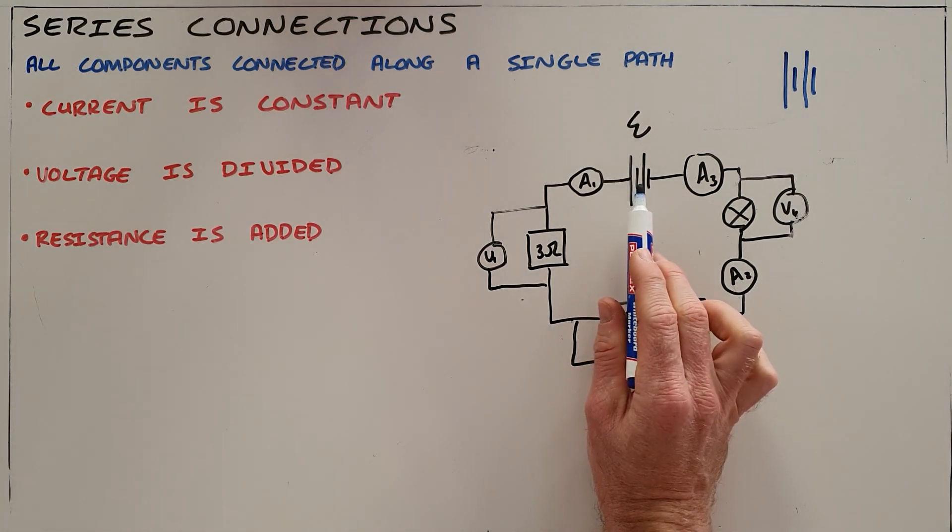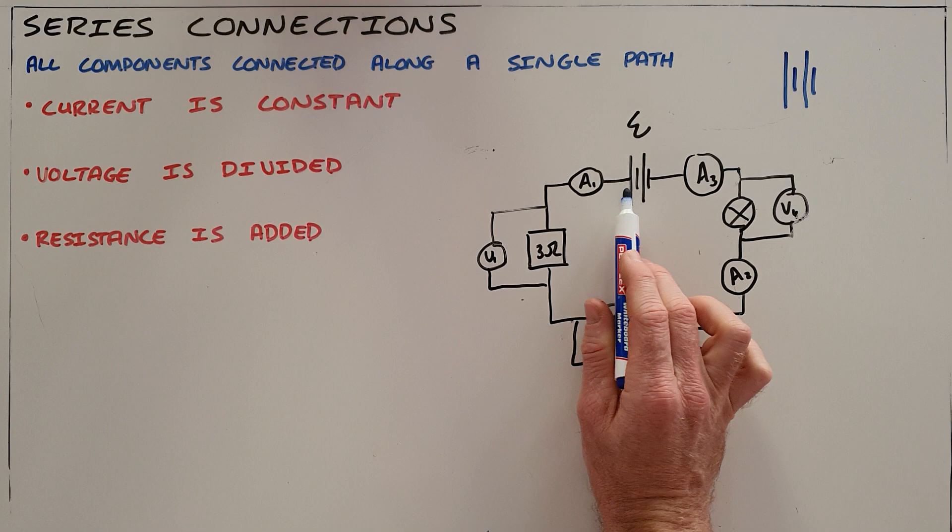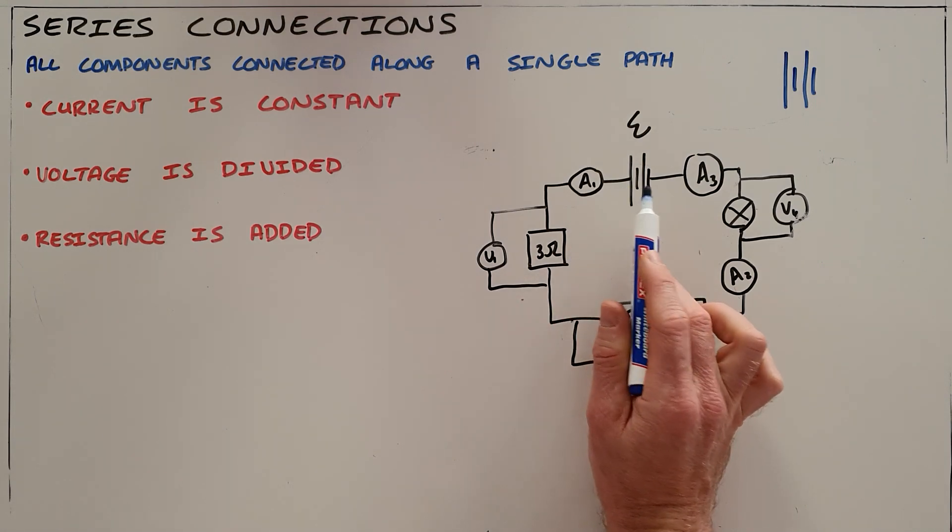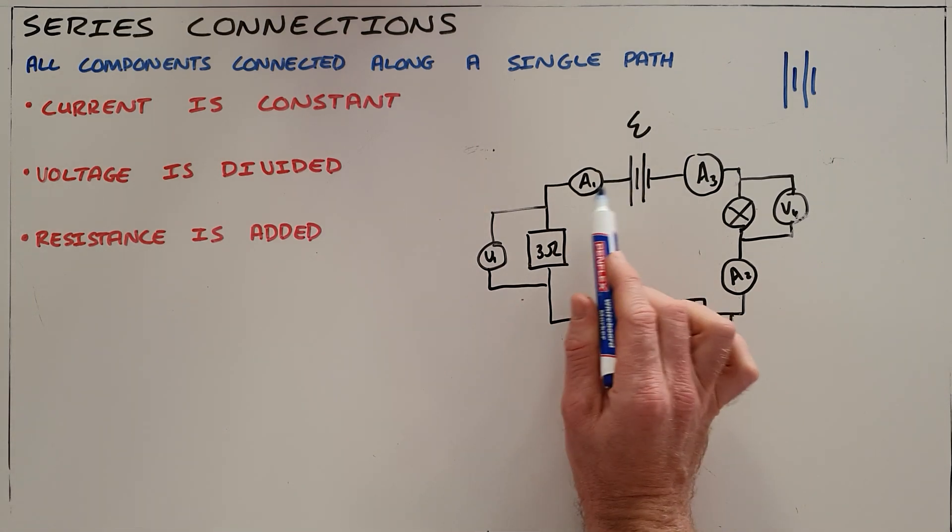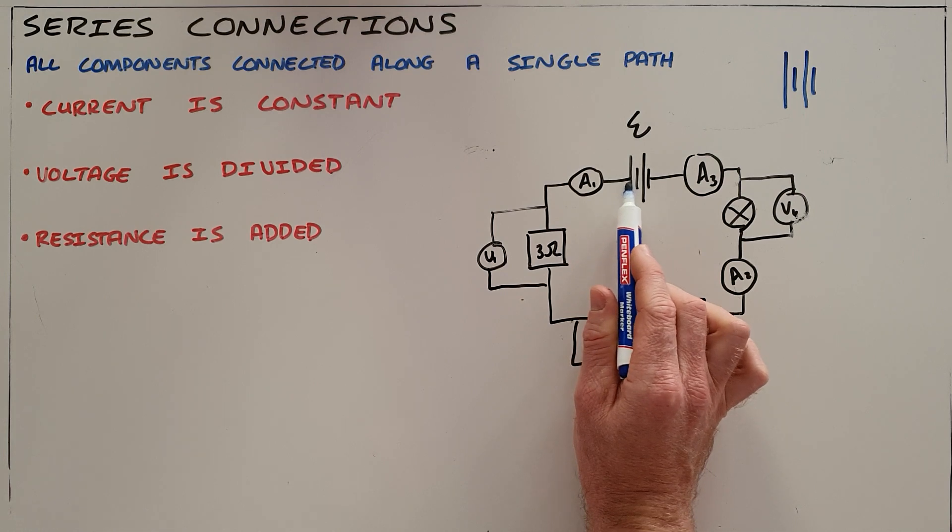So in this circuit here we have a battery that is producing an electric current by pushing charge out, and because this is a series connection we can see that that charge and current is forced to follow a fixed path.